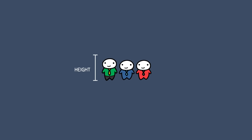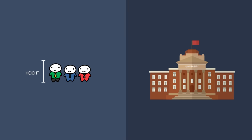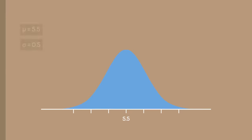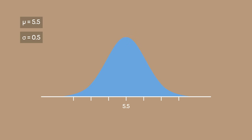If we were measuring the heights of all students at a local university and found that it was normally distributed with a mean height of 5.5 feet and a standard deviation of 0.5 feet, we can construct a normal distribution. From here, we can create intervals that increase by the standard deviation: 6, 6.5, and 7 on the right side, and 5, 4.5, and 4 on the left side.